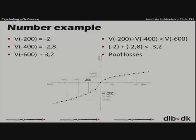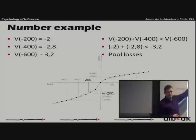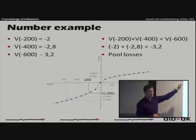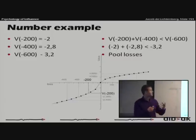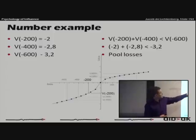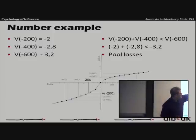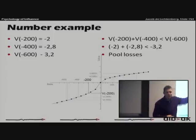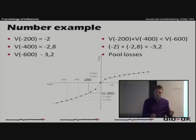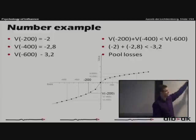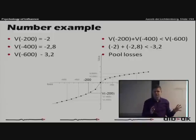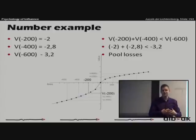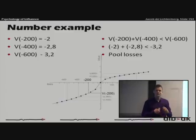So let's have a number example. If you have the value of minus 200 is minus two, value of minus 400 is minus 2.8, value of minus 600 is minus 3.2. Well, as you'll see, it's a lot worse because you will feel if you get the losses two times. The small losses, it's still $600 you're losing, for example. But the feeling of the loss, if you first lose 200 and then 400 is going to be worse than the feeling of losing $600 at once.